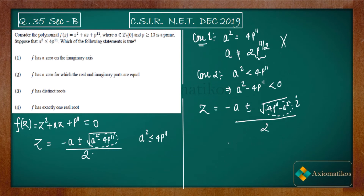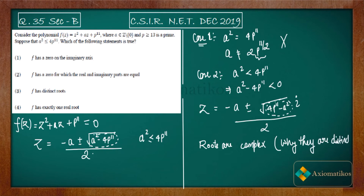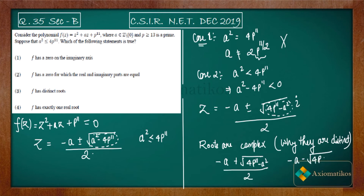We have already established that this number is non-zero, so the roots are complex. Now let's check why they are distinct. The first root is (−a + i·√(4p¹¹ − a²)) / 2 and the second is (−a − i·√(4p¹¹ − a²)) / 2. Since one has a plus and the other a minus, both roots are distinct.